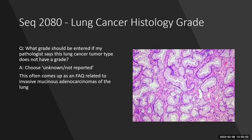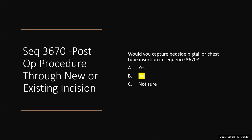Sequence 2080 — Lung Cancer Histology Grade: for invasive mucinous adenocarcinomas where the pathologist says the tumor type does not have a grade, choose 'Unknown/Not Reported' — do not leave it blank. Sequence 3670: do not capture bedside pigtail or chest tube insertions in sequence 3670. This sequence is not intended to capture bedside procedures, with the exception of a very few instances outlined in the training manual.